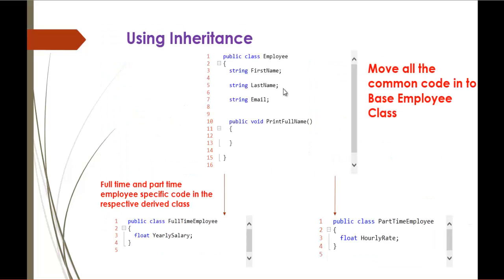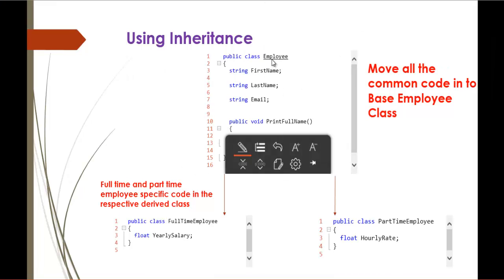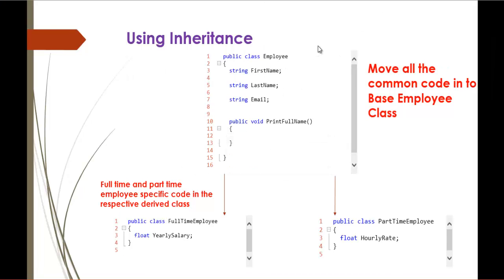Since a lot of properties and methods are common in both classes, what I've done is I've grouped all the properties and the method which are common to both. I've made that class the Employee class, and this is where inheritance starts. When I made this Employee class as the common class to both the employees — that is FullTimeEmployee and PartTimeEmployee — I'll call this common class the Base Class. Move all the common code into a Base Class Employee.